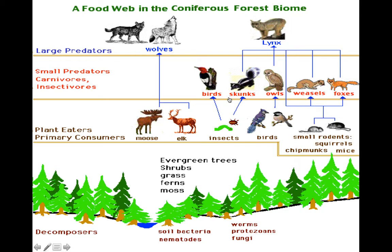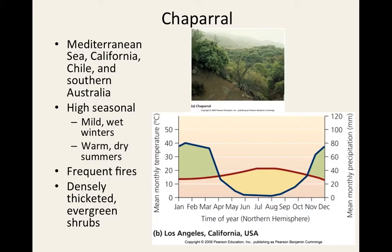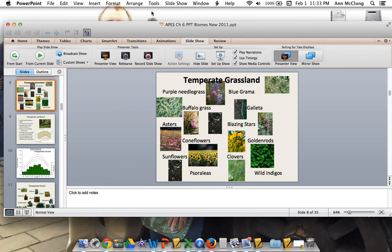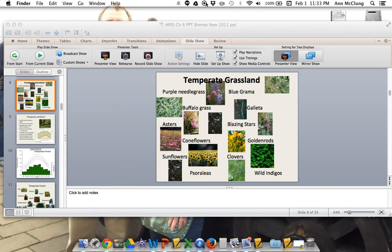The chaparral is located near the Mediterranean Sea, in California, parts of Chile, and southern Australia. It has mild, wet winters and warm, dry summers, making it prone to forest fires due to its shrubby vegetation. Precipitation is lowest in summer and highest in winter, while temperatures remain relatively even and cool year-round. This concludes the overview of terrestrial biomes.